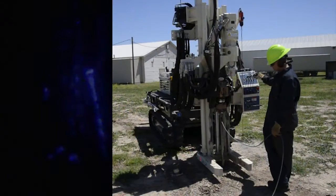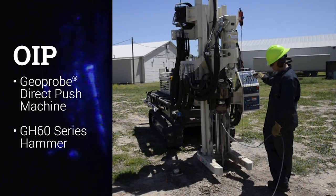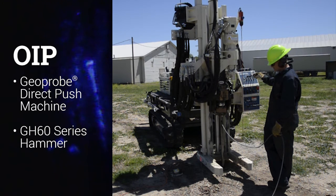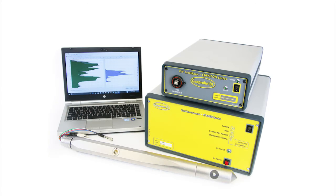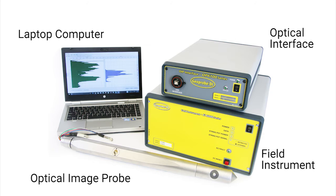This system can be run on any Geoprobe direct push machine with a 60 series hammer. Major components of this system include the Optical Image Probe, the Optical Interface, the Field Instrument, and a laptop computer.